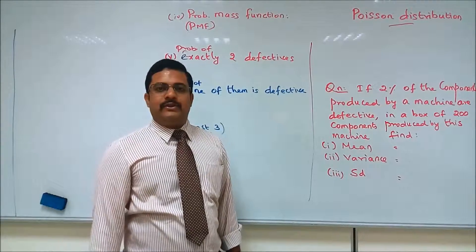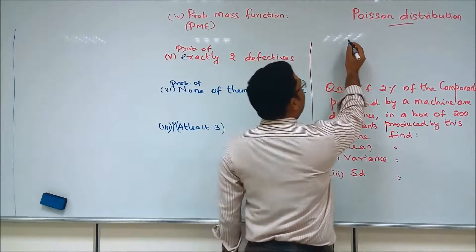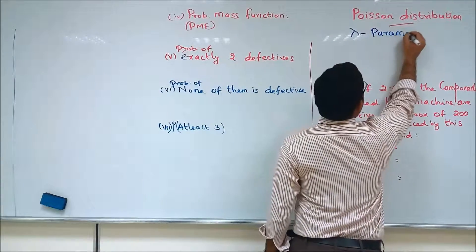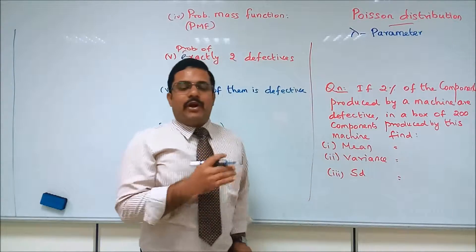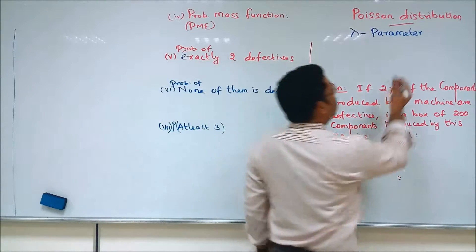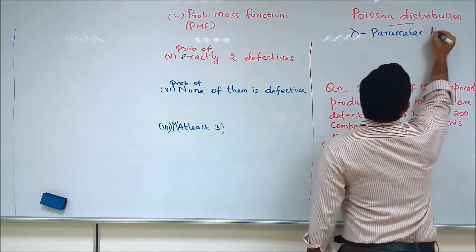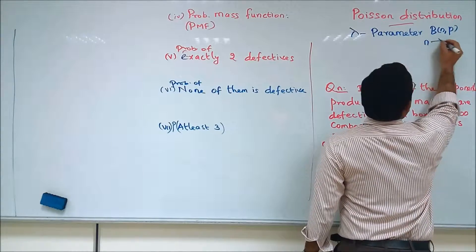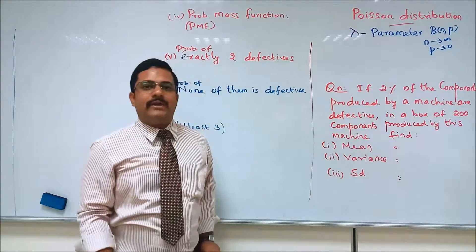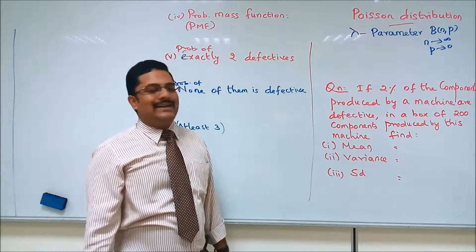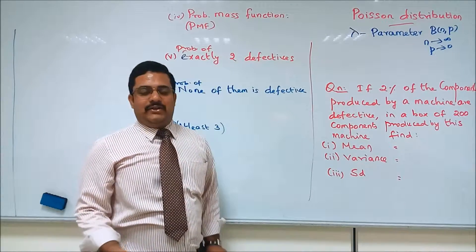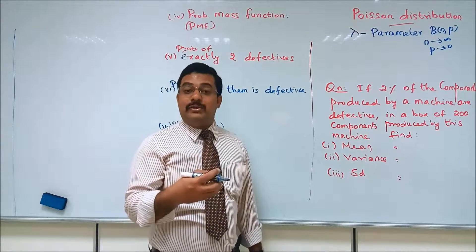In the Poisson distribution we have lambda as the parameter. This Poisson distribution is the limiting case of the binomial distribution. In a binomial distribution, if n tends to infinity and p tends to 0 — that is, the number of items is more and the probability of success p tends to 0 — we can call this the Poisson distribution.